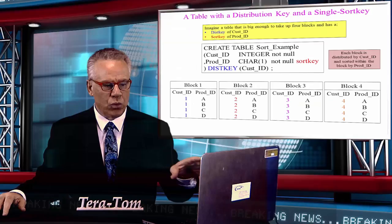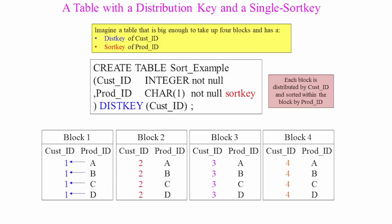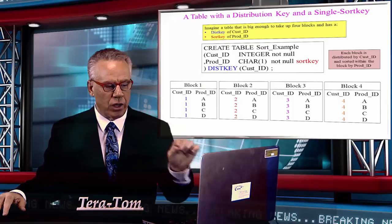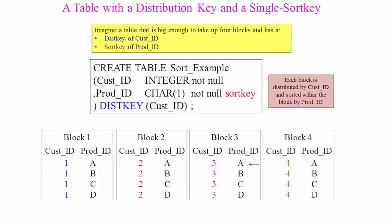And then, each one of those slices is going to sort their blocks by prod ID so you can see customer one in block one with ABCD, customer two in block two, ABCD, and so on. That's a sort key exactly as we know it.